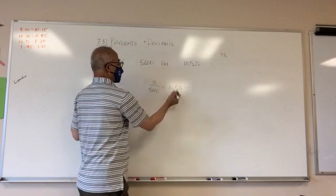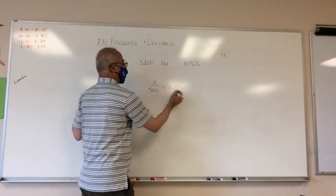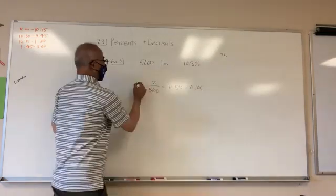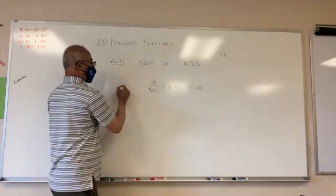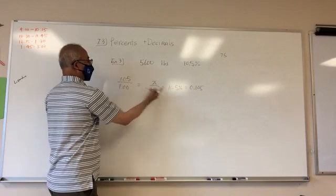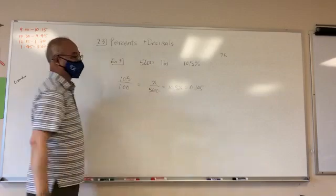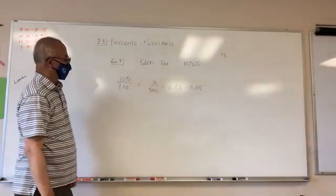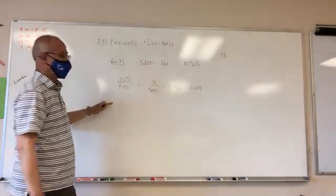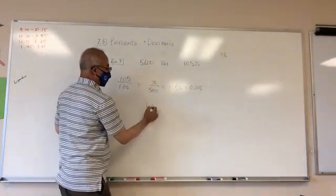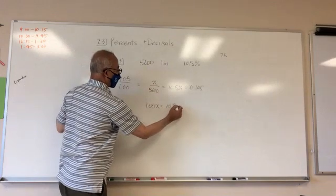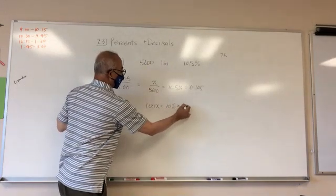And I'm trying to find what is 10.5 percent of this. So I don't know how many pounds is the same as 10.5 percent. I change this into decimal. I move it over here. I get 0.105. So this is the same as 100 over 10.5. So you just have to cross multiply. 100X is equal to 10.5 times 5,600.